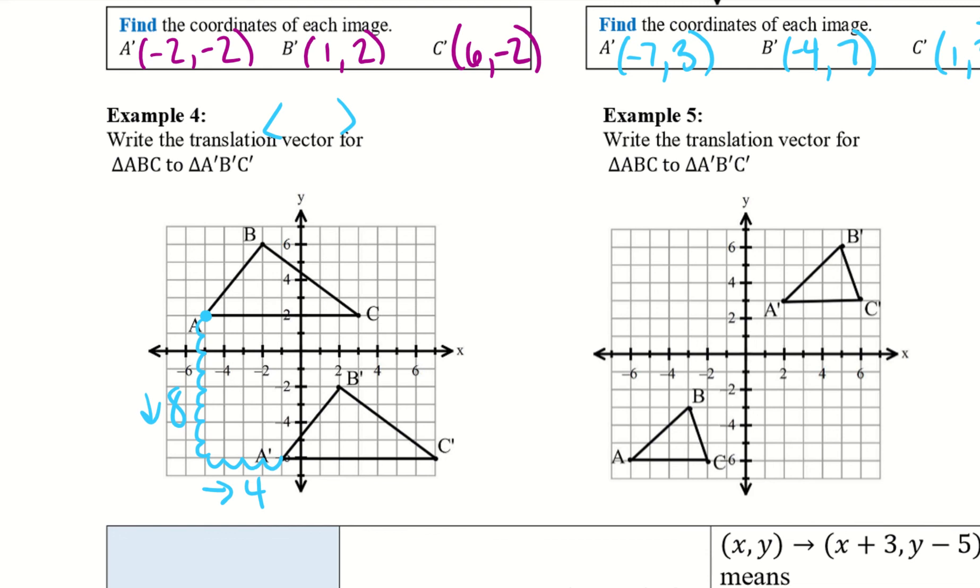So then I went right 4. So down, we always start with our X. So X, Y. So X is left and right. So if I went right 4, that's a positive 4. Then I went down 8, so that's negative 8. So that is the vector from our image to our pre-image.